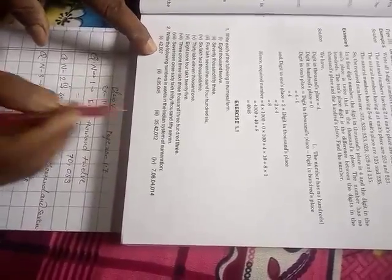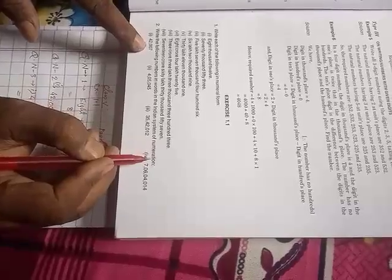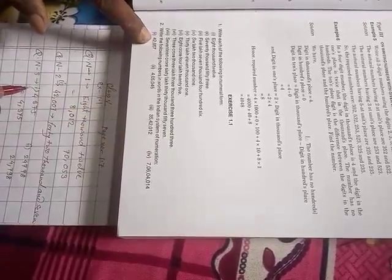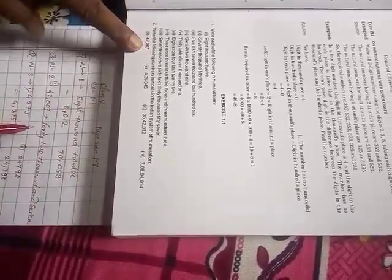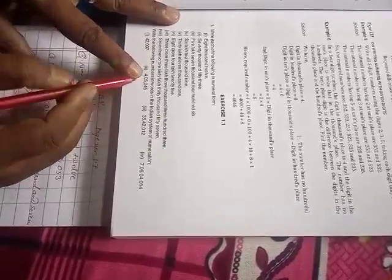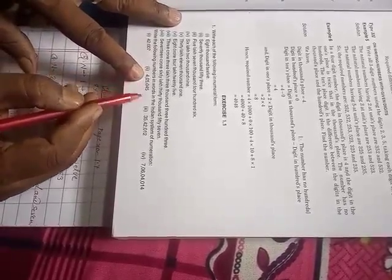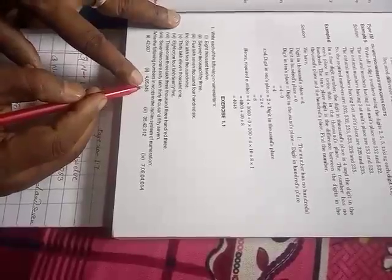Question number two: 42,007. You have to write in the Indian system of numeration. It means forty-two thousand and seven. Number two: 4,05,045. It is four lakhs, five thousand, and forty-five.